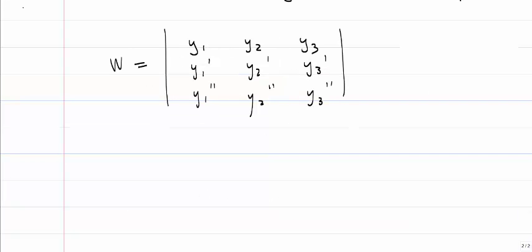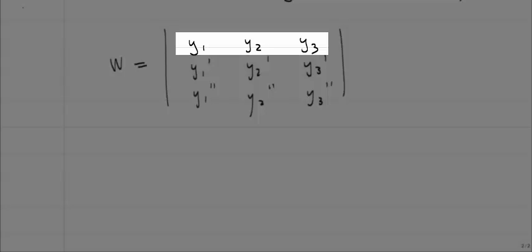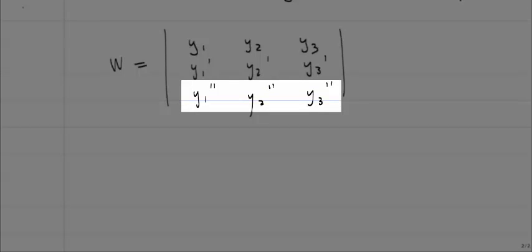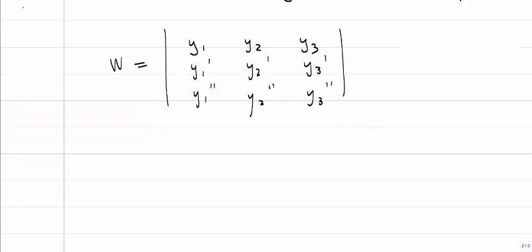The Wronskian is simply the determinant of this matrix: y1, y2, y3 in the first row, and then the derivatives of those functions, and then the second derivative of those functions. If we had five solutions, we would have five rows in addition to the five columns.